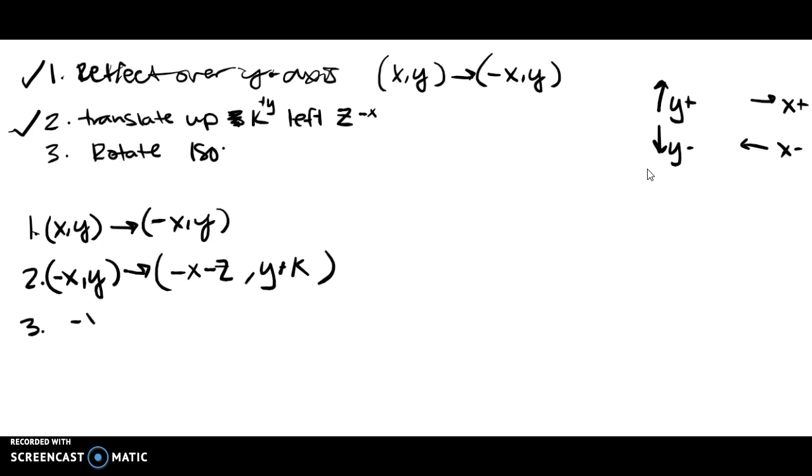Step three, we are starting with negative X, negative Z, comma, Y plus K. This is what we're starting with. And then we're going to rotate it 180 degrees. Well, when we rotate 180 degrees, if we started with the point XY, after we rotate it, it will become negative X, negative Y.